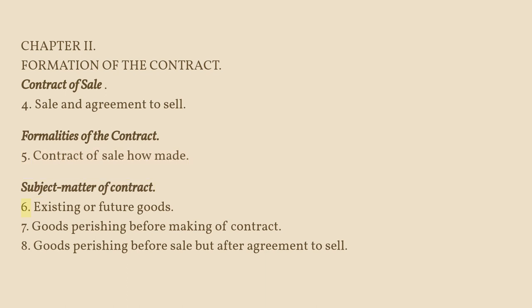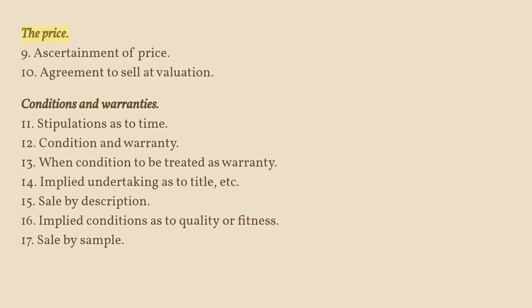Section 6: Existing or Future Goods. Section 7: Goods Perishing before Making of Contract. Section 8: Goods Perishing before Sale but after Agreement to Sell. The Price. Section 9: Ascertainment of Price. Section 10: Agreement to Sell at Valuation.